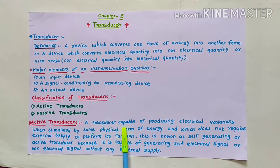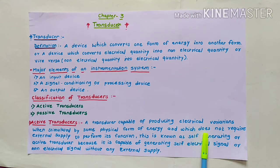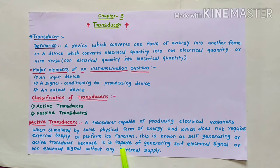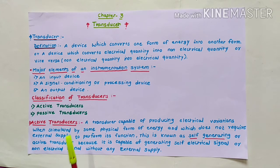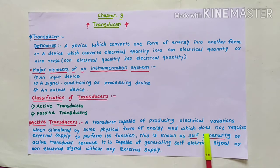An active transducer is capable of producing electrical variations when stimulated by some physical form of energy, and it does not require an external supply to perform its function. This is known as a self-generating or active transducer because it is capable of generating an electrical or non-electrical signal without any external supply. Active transducers are also called self-generating transducers.